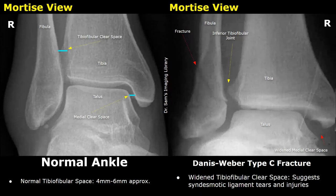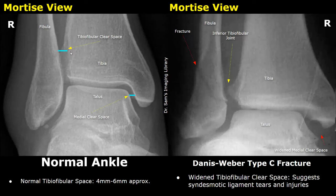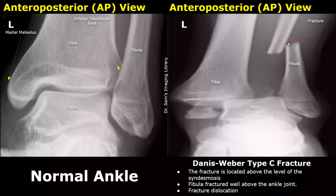Another important clear space to note is the tibio-fibular clear space, measured one centimeter above the tibial plafond — the space between the medial edge of the fibula and the tibia. Normally this space is between four and six millimeters. In this image, however, the tibio-fibular clear space is widened. This image shows a fracture of the fibula located above the level of the syndesmosis, making it a Weber C fracture. This is a very severe injury, and fracture dislocation is noted.